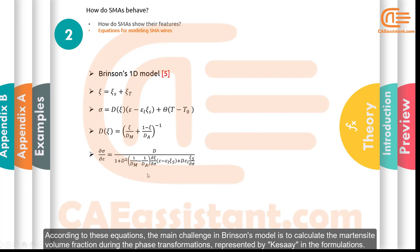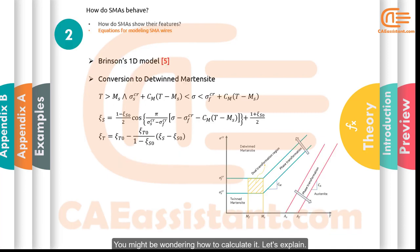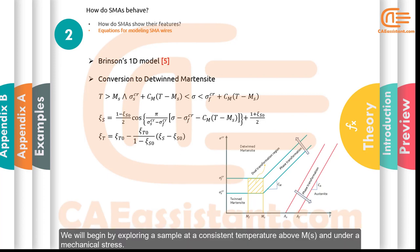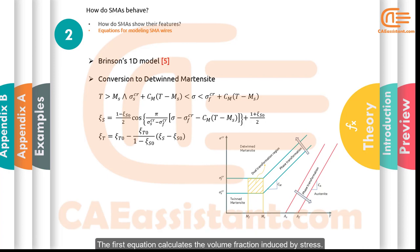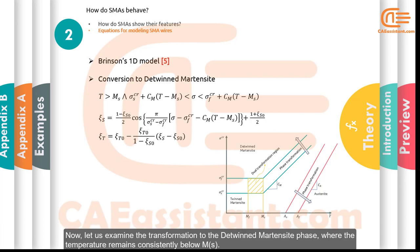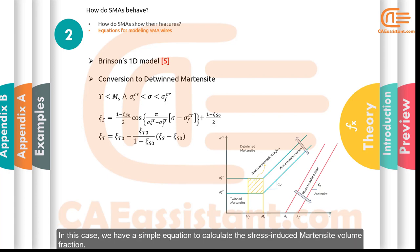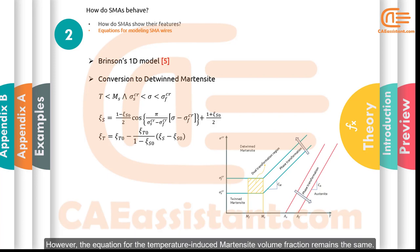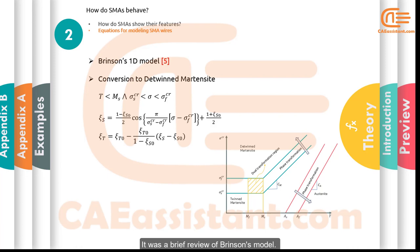The main challenge in Brinson's model is calculating the martensite volume fraction during phase transformations. For a sample at a consistent temperature above Ms under mechanical stress, two equations determine the martensite volume fraction: the first calculates the stress-induced volume fraction, and the second handles the temperature-induced volume fraction. When examining the transformation to the detwinned martensite phase at temperatures consistently below Ms, a simpler equation calculates the stress-induced martensite volume fraction, while the temperature-induced equation remains the same.